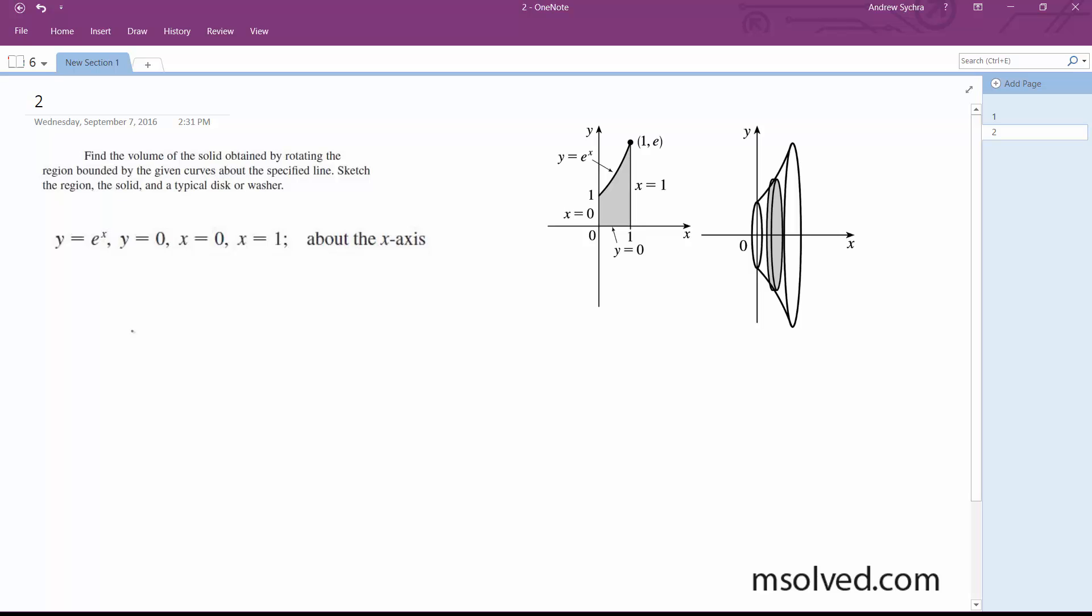So y equals 0 and x equals 0, bounded from 0 to 1. We're using disks, so this will be set up in a pi r squared fashion.